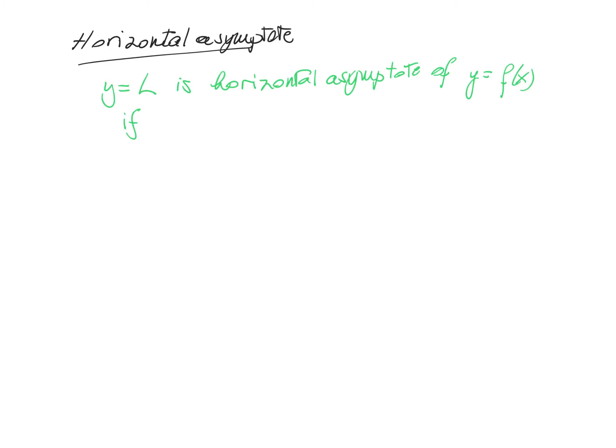Just as we had vertical asymptotes for infinite limits, we now have horizontal asymptotes, which are linked to limits at infinity. The horizontal line y equal to l is a horizontal asymptote of the function f of x, if the limit of f of x is l for x going to either plus infinity or for x going to minus infinity.